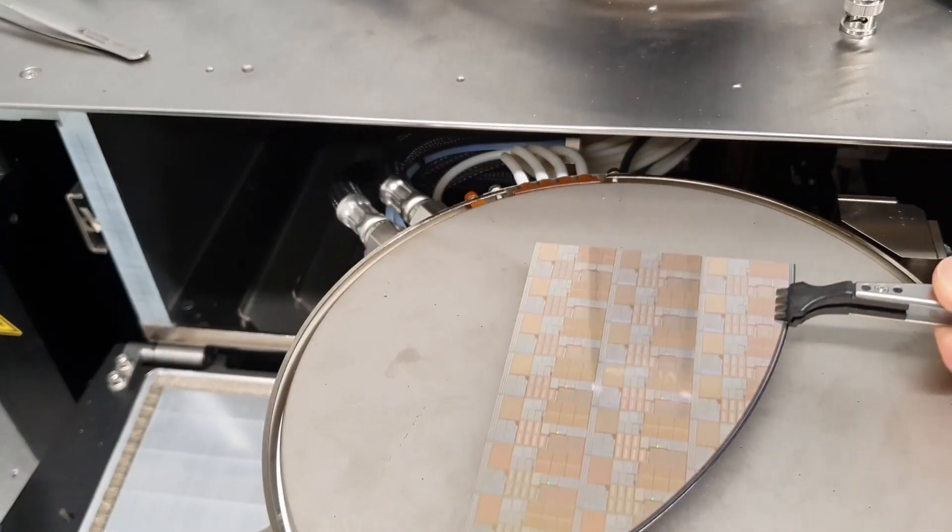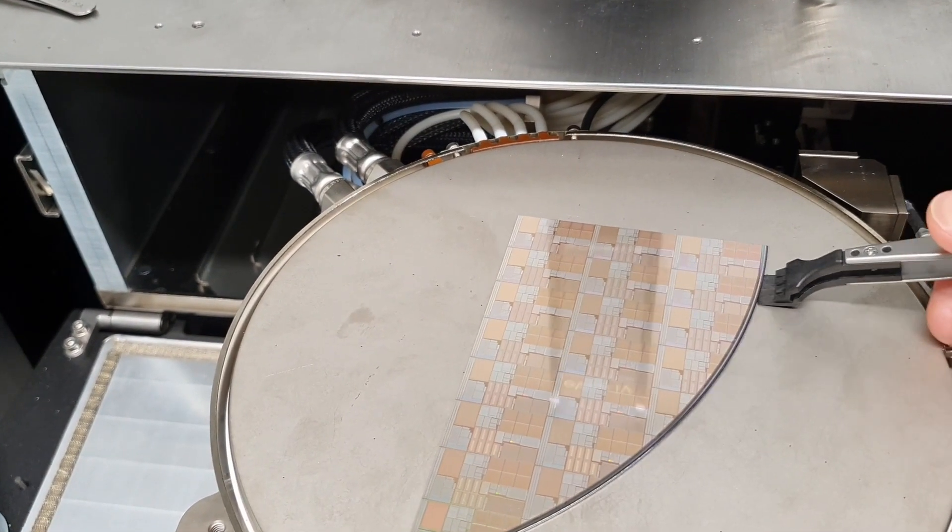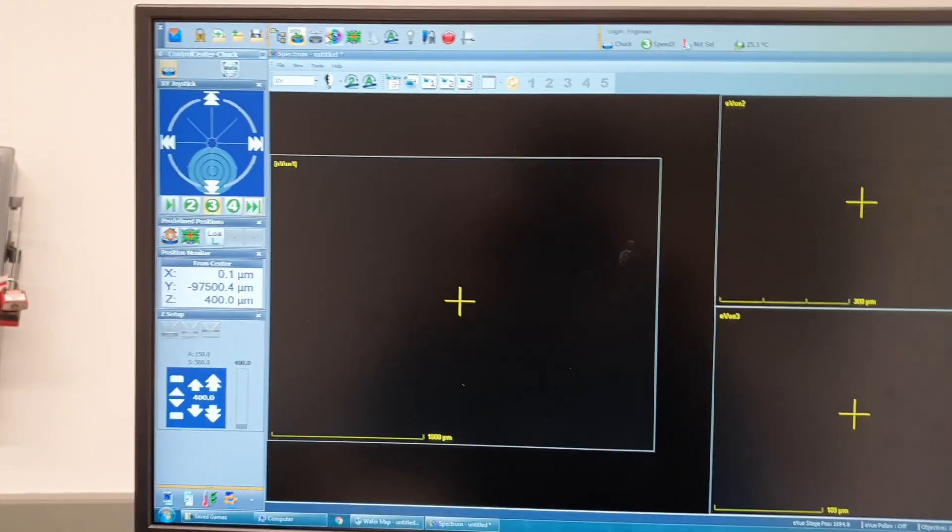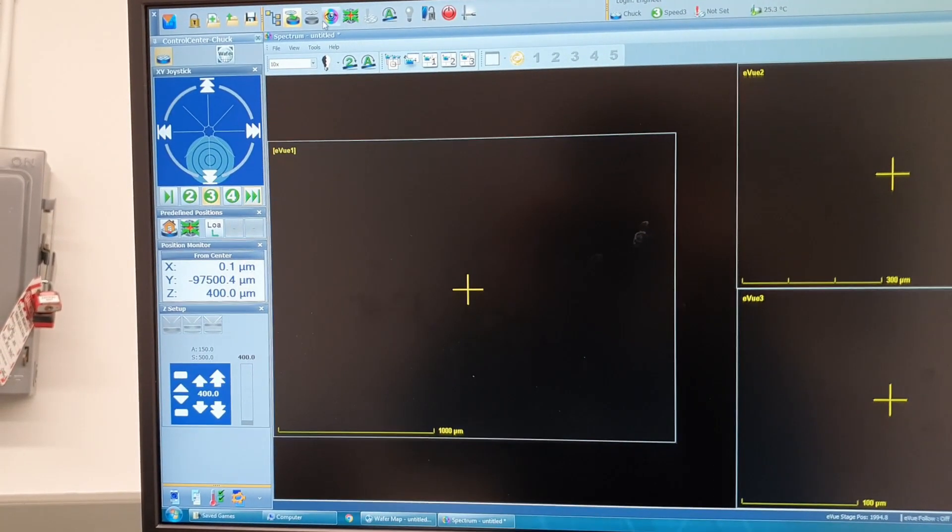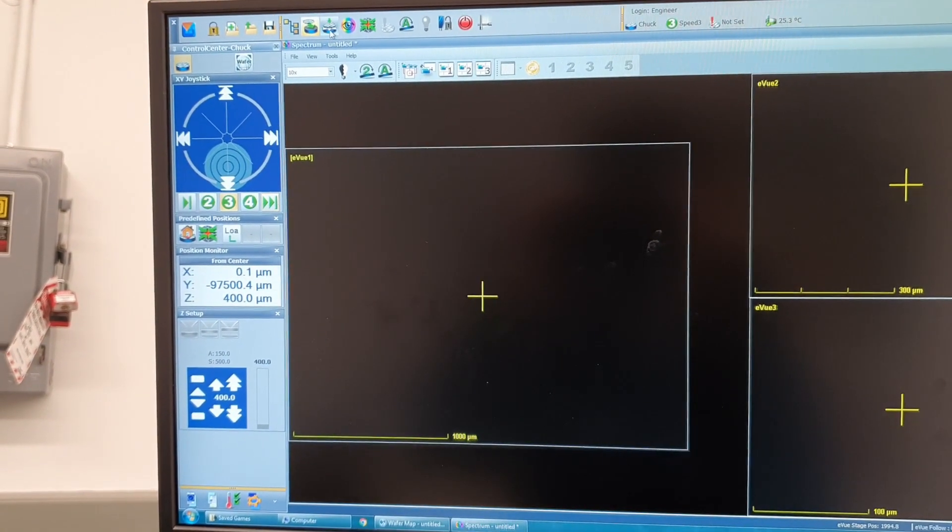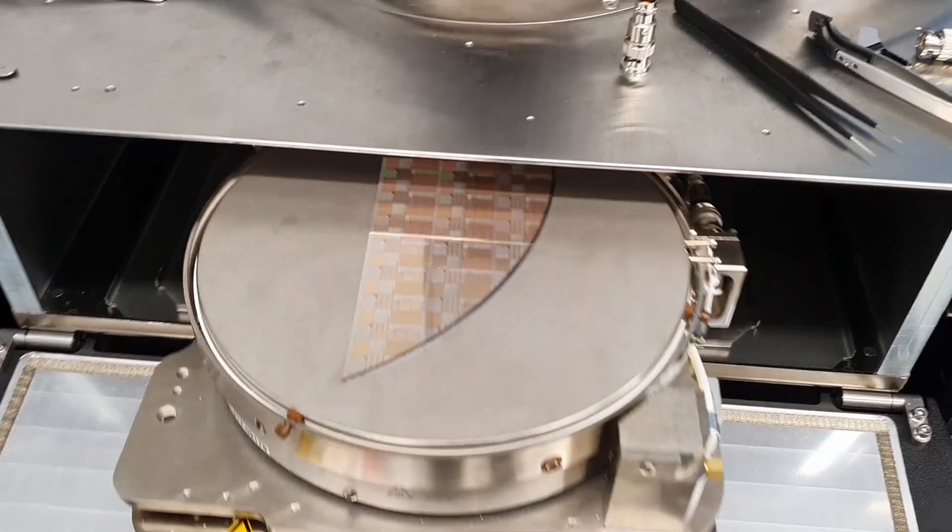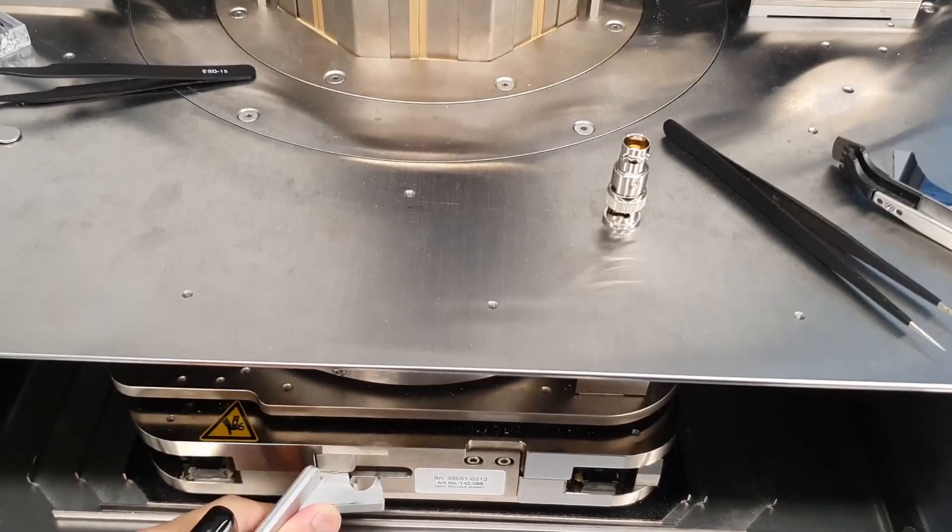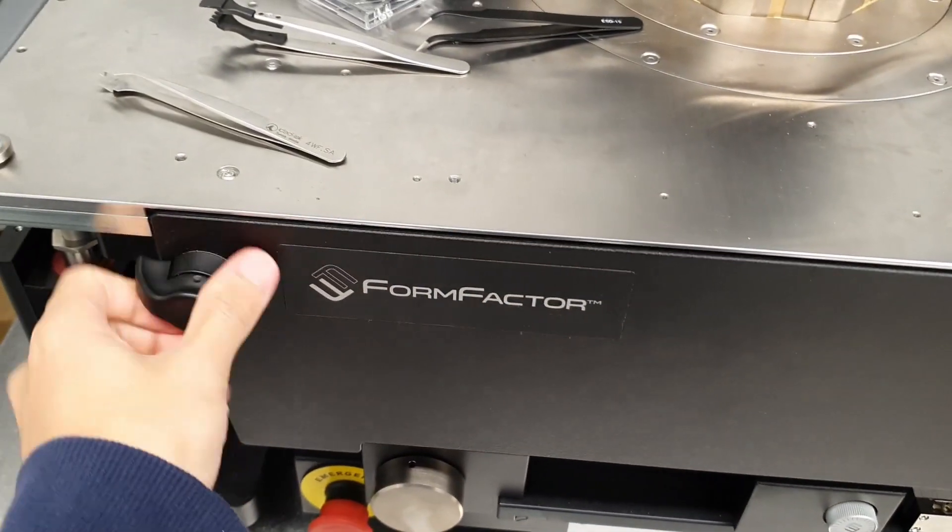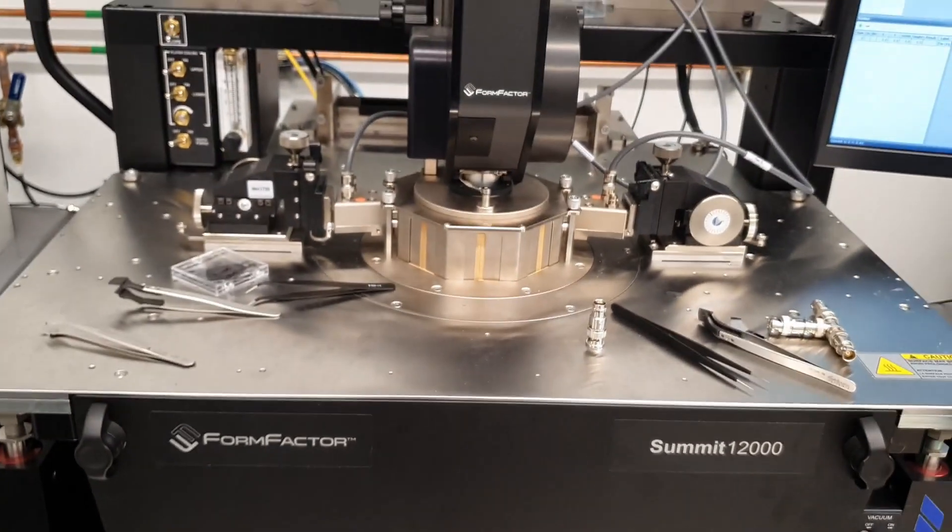Then, we load the sample we want to measure like this and turn the vacuum on in the contour software. Check one more time to make sure the vacuum is turned on properly. Then, push the truck in and close the door. And that's it for loading the sample.